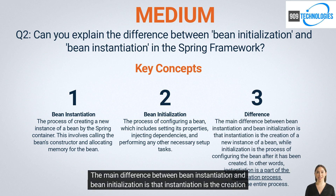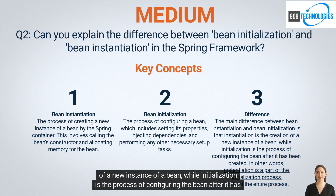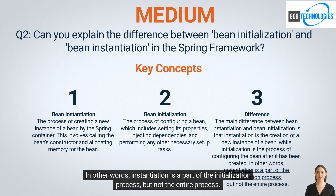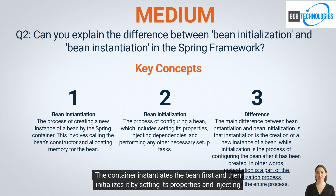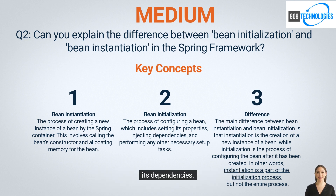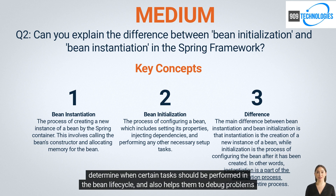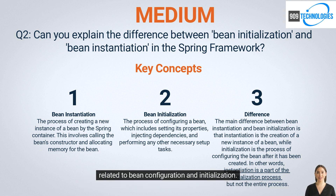The main difference between bean instantiation and bean initialization is that instantiation is the creation of a new instance of a bean, while initialization is the process of configuring the bean after it has been created. In other words, instantiation is a part of the initialization process, but not the entire process. The container instantiates the bean first, and then initializes it by setting its properties and injecting its dependencies. This distinction helps developers determine when certain tasks should be performed and debug problems related to bean configuration.